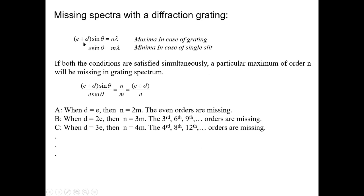Just as we found missing spectra in the double slit case, we can find missing spectra in the grating. The maxima due to the grating is given by (E + D) sinθ = Nλ, and the minima due to single slit is E sinθ = mλ. Since the final pattern is the product of the grating pattern and the single slit pattern, if at a given θ the single slit minimum and grating maximum coincide, those grating maxima will be absent from the spectra. The order of missing spectra is given by N/m = (E + D)/E.